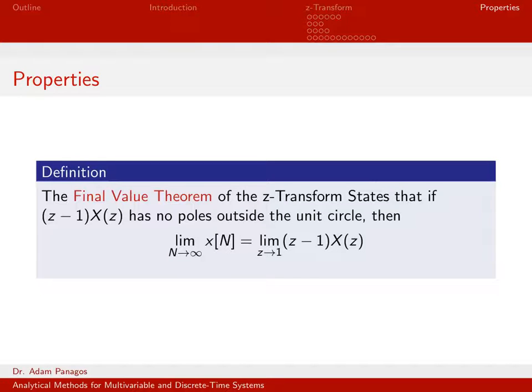The difference is, this lets us get kind of the final value of our signal. If x of n is kind of asymptotically approaching 0 or approaching some quantity, we can easily compute it using z-domain information only. We don't actually have to go back to the time domain at all. We can just compute it directly using this limit.